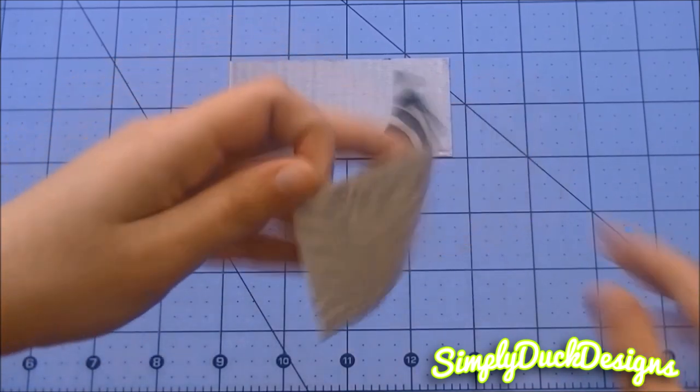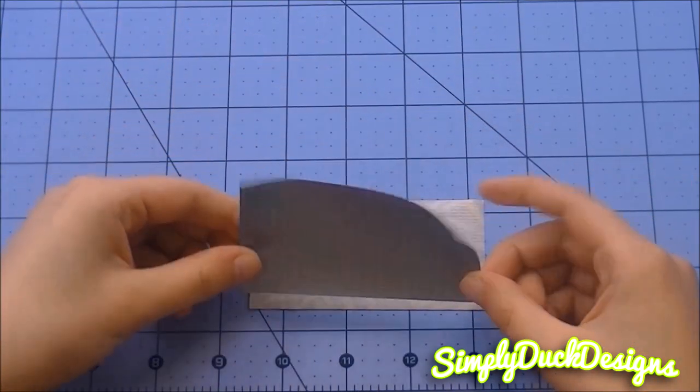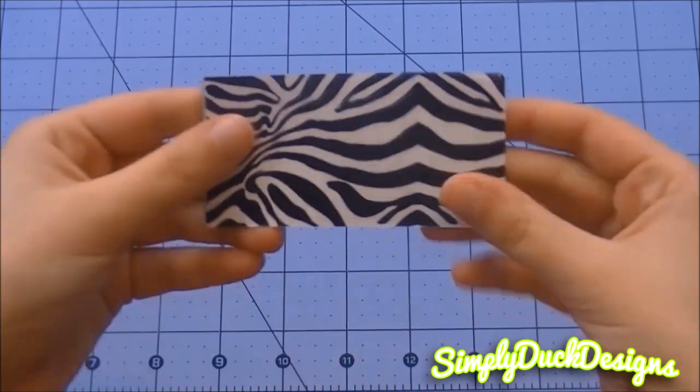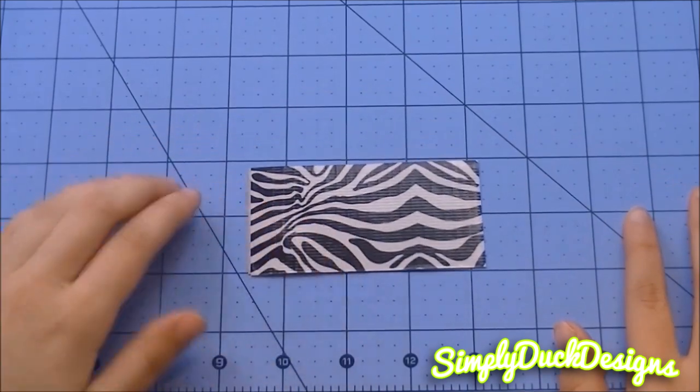And we're just going to flip up our pattern. Then I'm going to peel up my silver and I'm just going to place that directly on the zebra. And this should make your first card pocket. And now I'm going to show you guys real quickly how to put on trim.